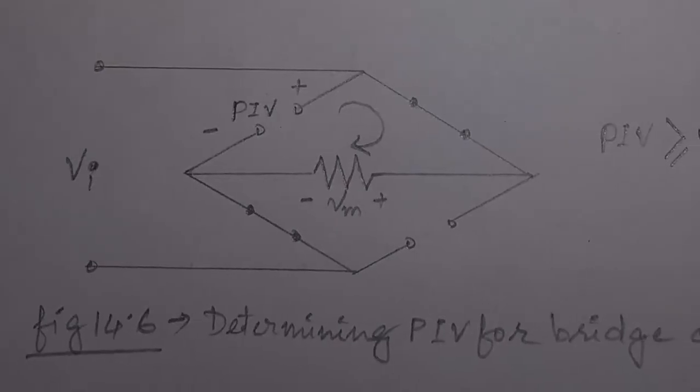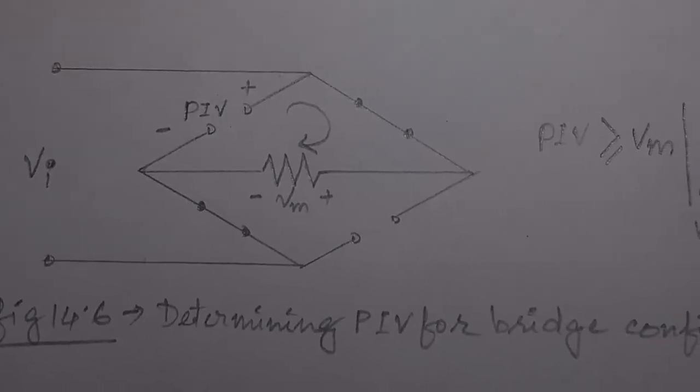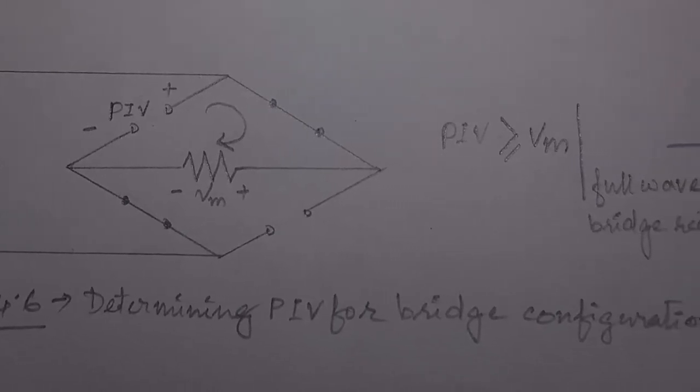The peak inverse voltage rating for the full wave bridge rectifier is given by equation 14.5.